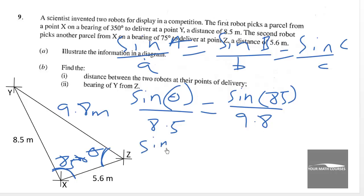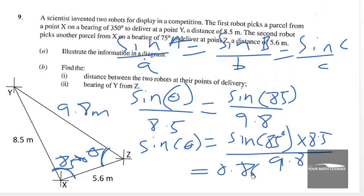So we have to evaluate this and we know sine theta will be equal to sine 85 degrees times 8.5 over 9.8 and when we evaluate that we are getting 0.8640. So theta will be equal to the sine inverse of 0.8640.